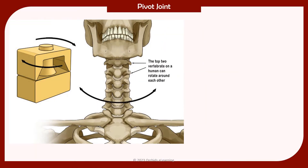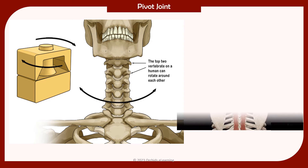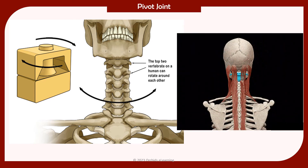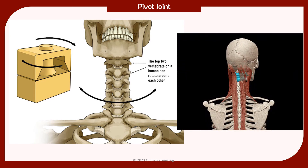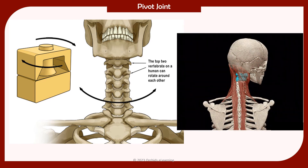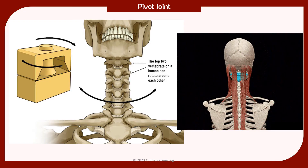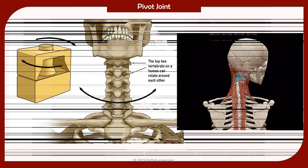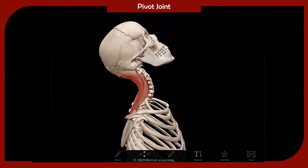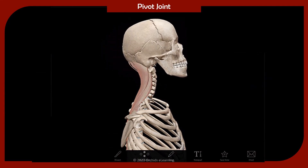In a pivot joint, the rounded surface of one bone fits into a ring formed by the other, such that one bone is able to rotate over the other. An example is the joint where the neck joins the head.